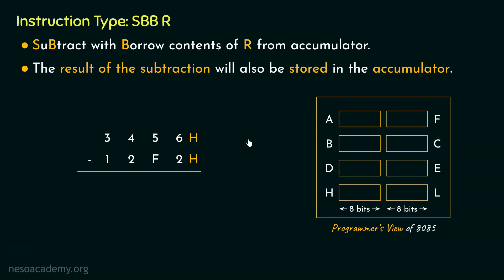Let me perform the subtraction first, thereafter we will get into the technicalities. If we subtract 2 from 6, the result is 4. Let's focus on the next part: subtraction of F from 5. Clearly the minuend is lesser than the subtrahend, so we need to borrow from the next place. If we borrow 1 from here, it will become 3 and this will become 15.